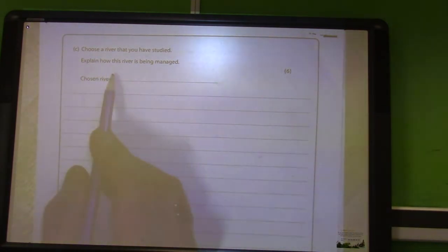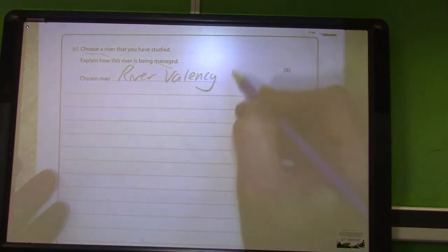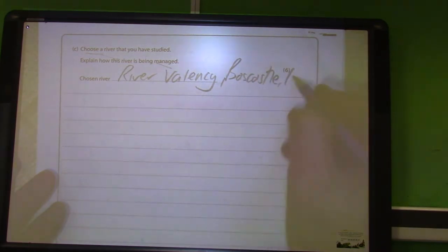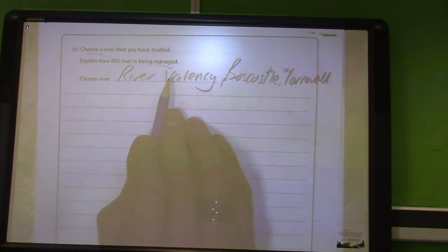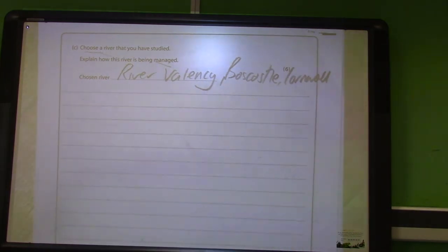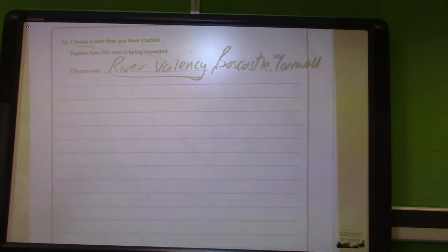So we've got another classic question here. You've got to choose a river you've studied and explain how that river is being managed. There's a whole load of different rivers you can actually use - you can look at the River Yangtze, the Mississippi River, or you can keep it small. The river we actually have looked at as a kind of small case study in England was obviously the River Valency in Boscastle, which is in Cornwall. So that's the one I'm going to use. It's not the River Boscastle - it's the River Valency and also the River Jordan in Boscastle.